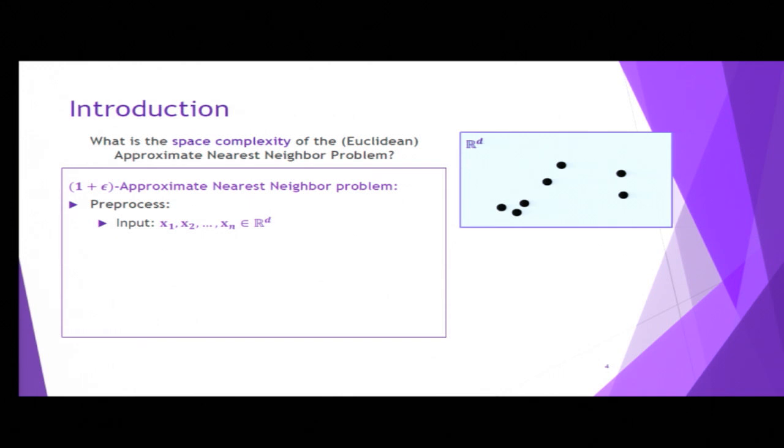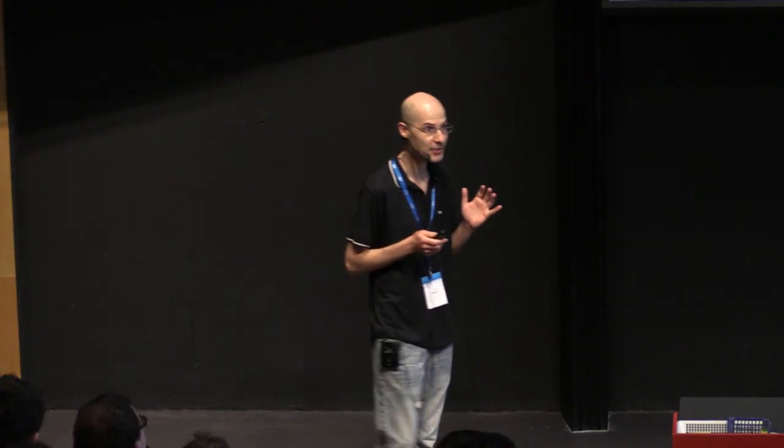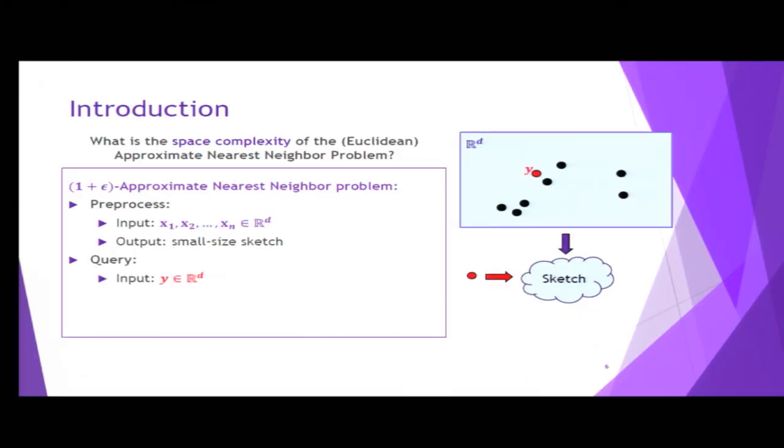In the first stage, we get a data set of n points in d dimensions, and our goal is to produce a small size representation of the data, which we call the sketch. We are compressing the data set. In the second stage, we get a new query point that we didn't know while we were sketching.